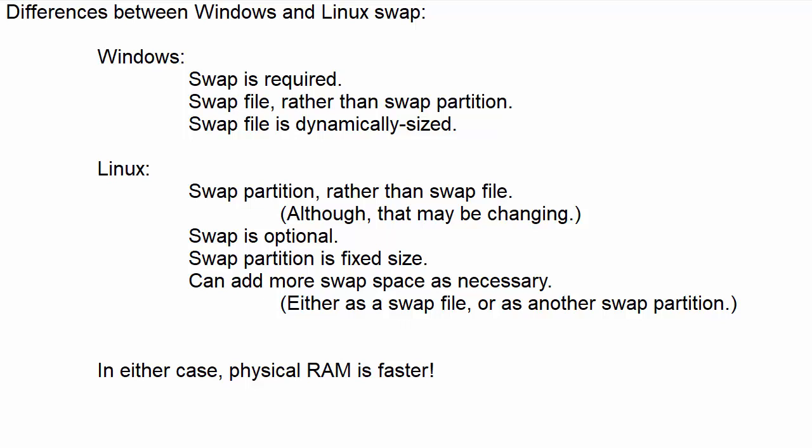Let's look at some differences between using swap space on Windows and swap space on Linux. With Windows, swap space is required — if you have a Windows machine without swap space, that machine will not boot. Windows uses a swap file rather than a swap partition, and that swap file is dynamically sized; it can grow and shrink as the need arises. With Linux, we have a swap partition rather than a swap file, although that may be changing.